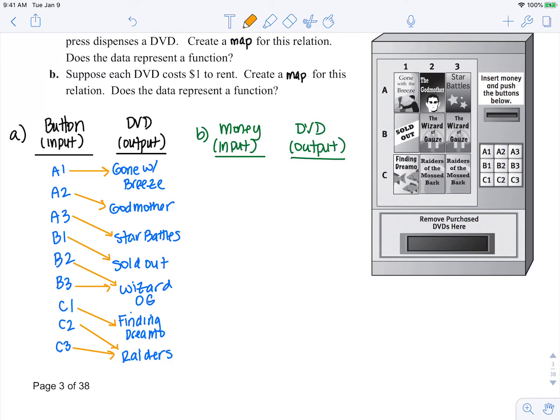one arrow to one output. So this is a function because each input maps to one output. So now we need to look at part B.